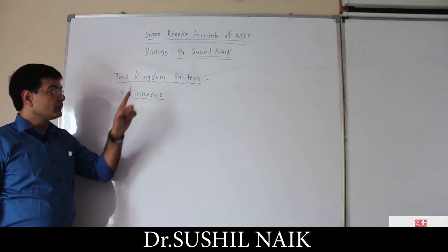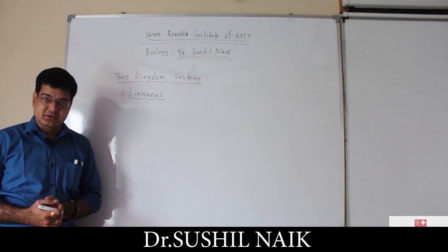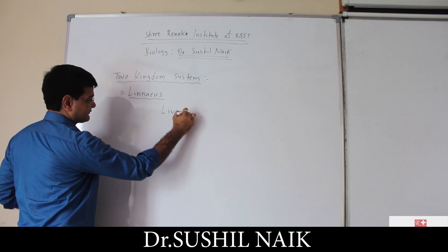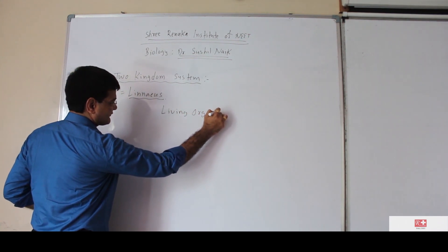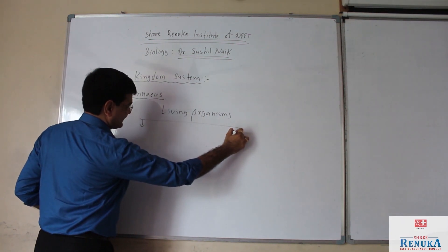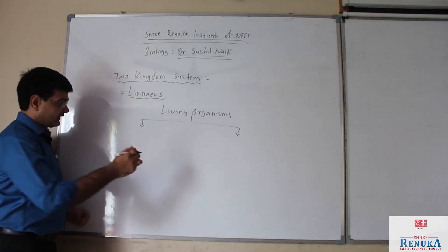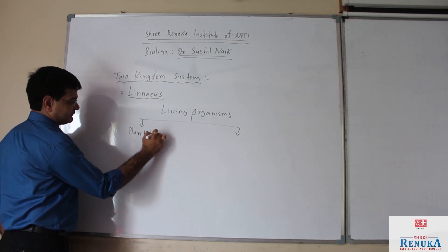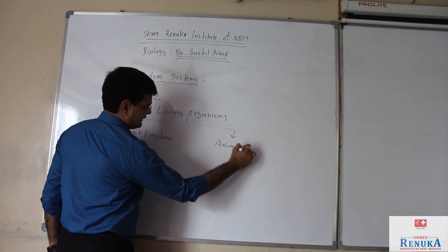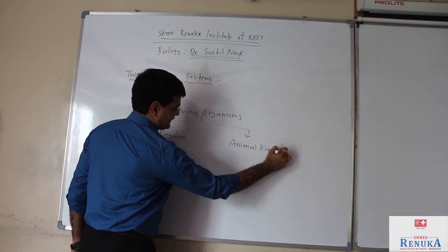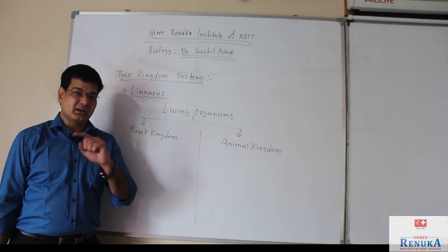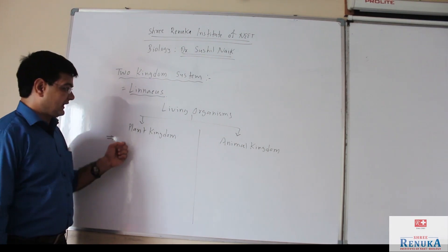Linnaeus was the scientist who gave the two kingdoms system of classification. In this system of classification, living organisms are classified into two categories only — the plant kingdom and the animal kingdom. By some decided criteria, living organisms are divided into plant and animal.